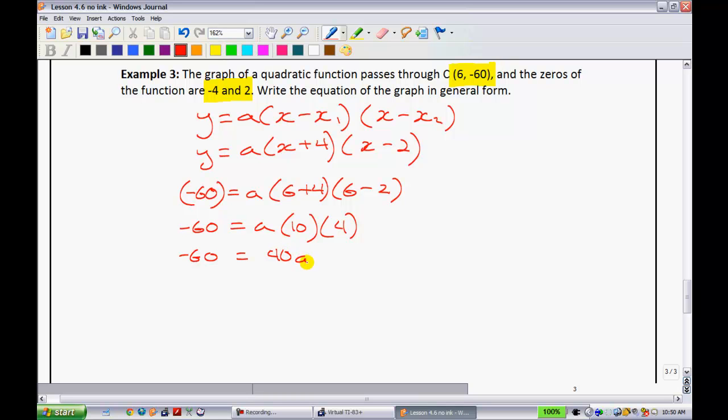Now, to solve for this, we just have to divide both sides by 40. And we get that a is equal to, when you simplify this, it'll end up being -3/2. Or you could write that as a is equal to -1.5, either way.